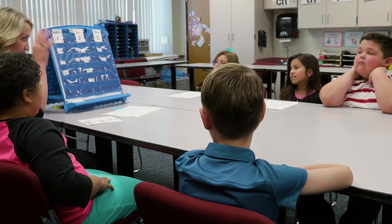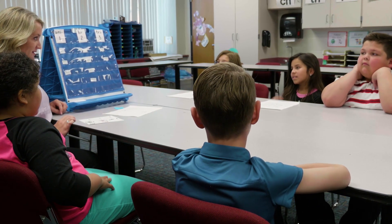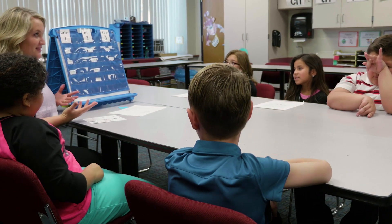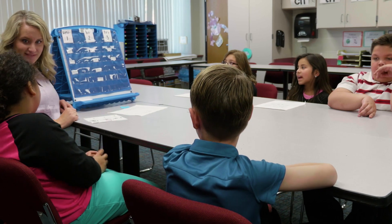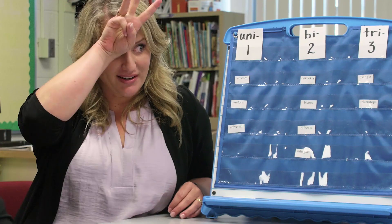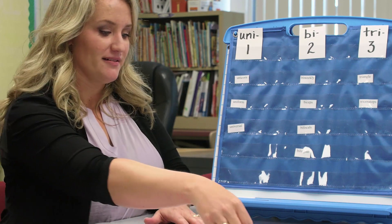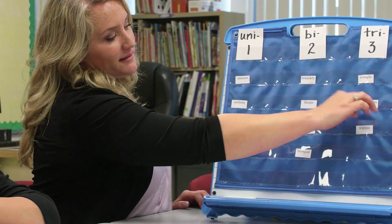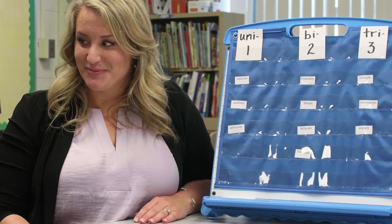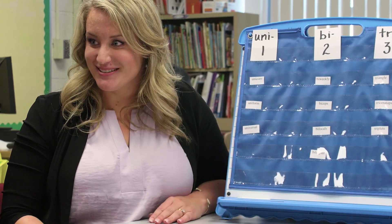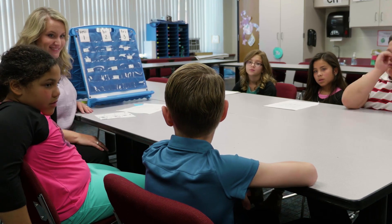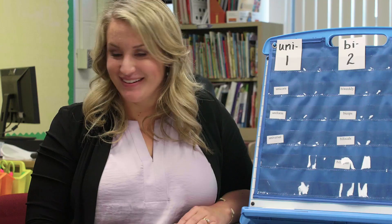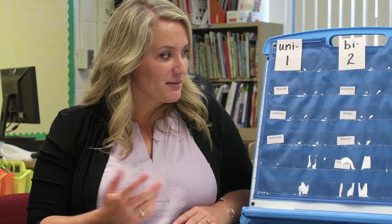Picture a triceratops in your head. Kind of show me with your hands — what does the head do? It has three horns. So it makes sense that it starts with the prefix tri — it's a dinosaur that has three horns. Triplets — what are triplets? Three babies that are born at the same time. So three babies born at the same time are triplets.